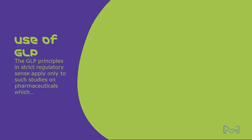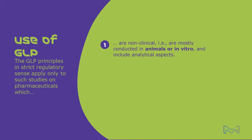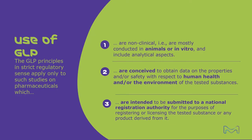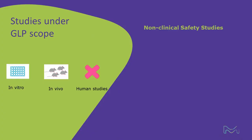The GLP principles in their strict regulatory sense apply only to studies on pharmaceuticals which are non-clinical — that is to say mostly conducted in animals or in vitro and include analytical aspects — conceived to obtain data on the properties and/or safety with respect to human health and/or the environment of the tested substances, and intended to be submitted to a national registration authority for the purposes of registering or licensing the tested substance or any product derived from it.